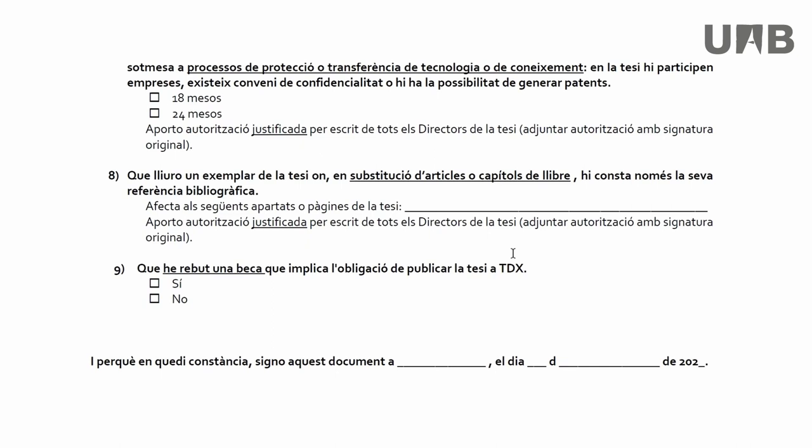This means that in your thesis you must include the bibliographic reference of the published article or book chapter, and in the deposit you must explain which pages and sections of your thesis are affected, as the full-text article cannot be included. With this, thesis supervisors should provide a justification explaining why there are not all the articles in your thesis by compendium. In this way, you can submit your thesis following all the recommendations regarding open publication given by the publisher that has published your articles or book chapters.